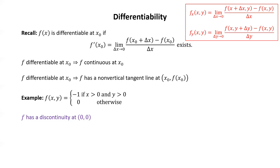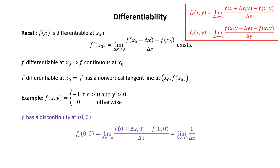Recall the definitions of the partial derivatives. Let's compute the partial of f with respect to x at (0, 0). That's the limit as delta x goes to 0 of f of (0 plus delta x, 0) minus f of (0, 0) over delta x. That's 0 because each of those terms has a 0 for the y coordinate, so we get the limit as delta x goes to 0 of 0 over delta x, which is just 0.